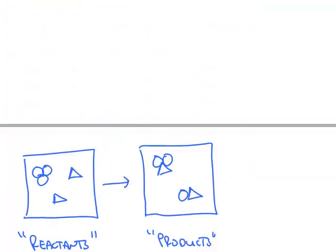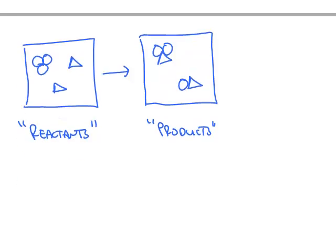So for example, here's a picture form of a chemical reaction. The starting material on the left is called the reactants. What you end up with are called the products, and the arrow represents the chemical change that takes place.